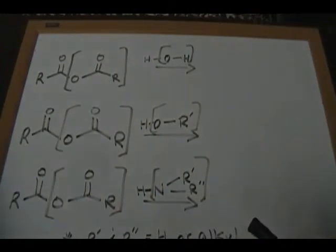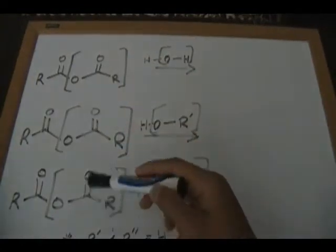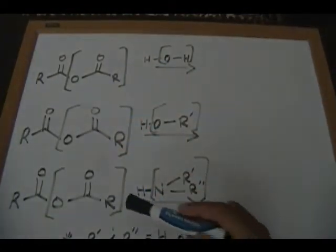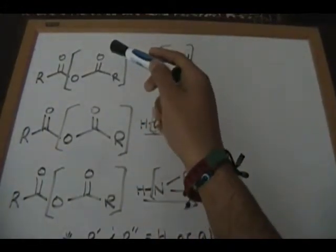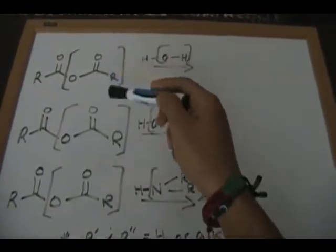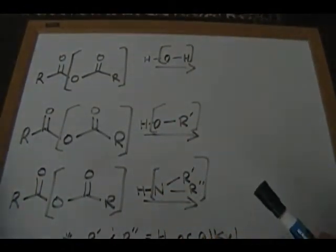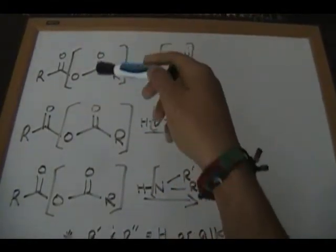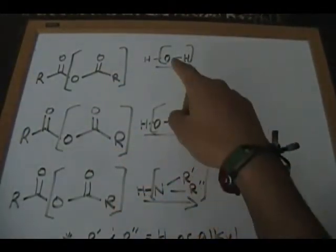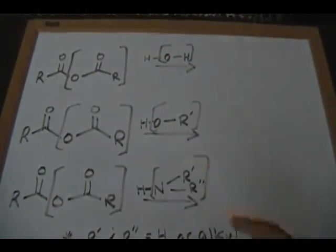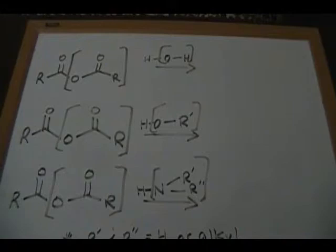Three reactions. Before I get into the reactions, a few things I want to talk about: the things I have in brackets are your leaving groups. For each and every one of these reactions, you'll generate a carboxylic acid as a byproduct — that is a result of these leaving groups. Each of the leaving groups I have in brackets will be replaced by the reagents I also have in brackets in the reagent section.